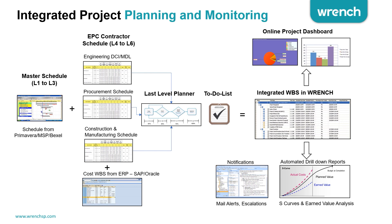RentSmart Project allows you to do planning down to the last level — it is a last-level planner. From that it provides a to-do list which lists out the activities to be done by each and every resource under different stakeholders. From this plan information it provides plan dashboards and reports, sends notifications to people based on their to-do list, and when work is done the system captures the actuals or progress and updates the dashboard.